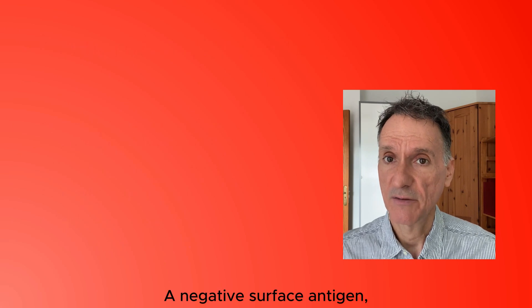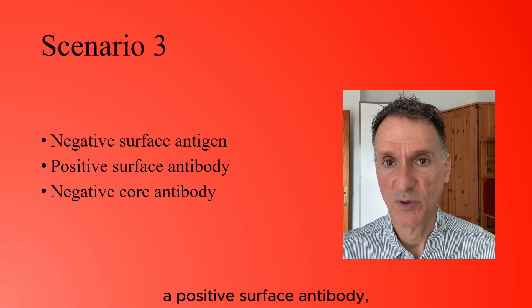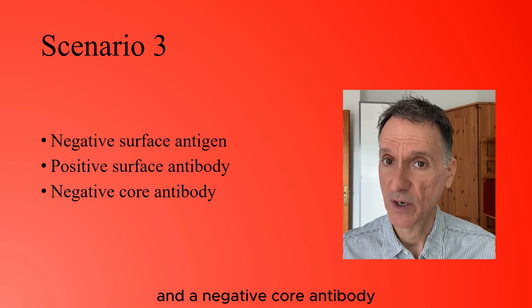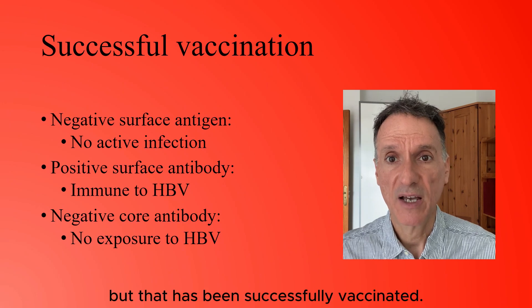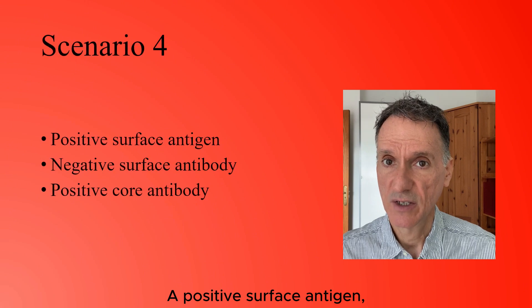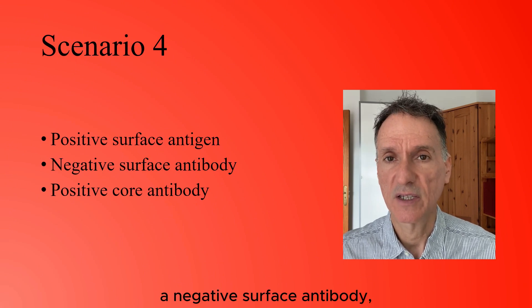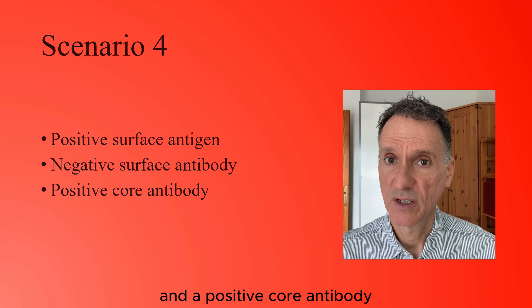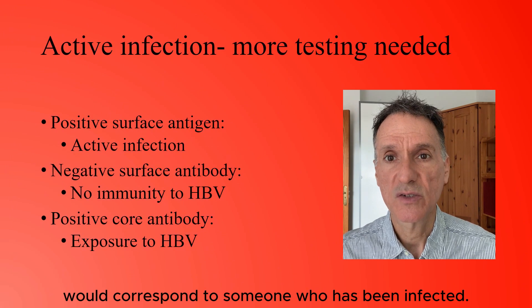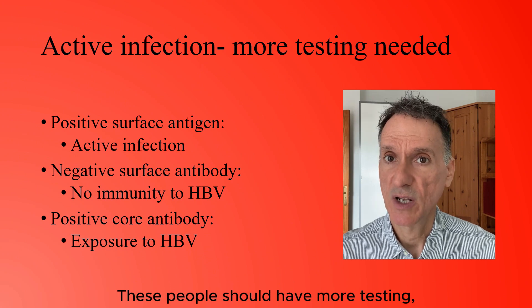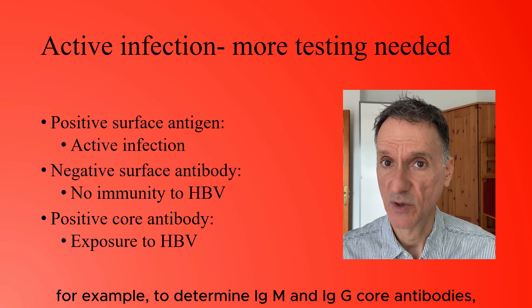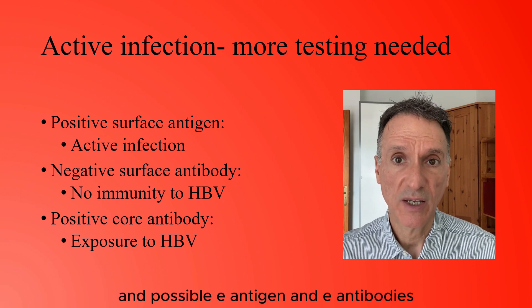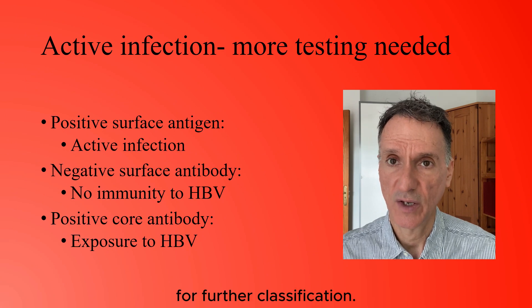A negative surface antigen, positive surface antibody, and positive core antibody corresponds to someone who has never been infected but has been successfully vaccinated. A positive surface antigen, negative surface antibody, and positive core antibody corresponds to someone who has been infected. These people should have more testing — for example, to determine IgM and IgG core antibodies and possible E antigen and E antibodies for further classification.